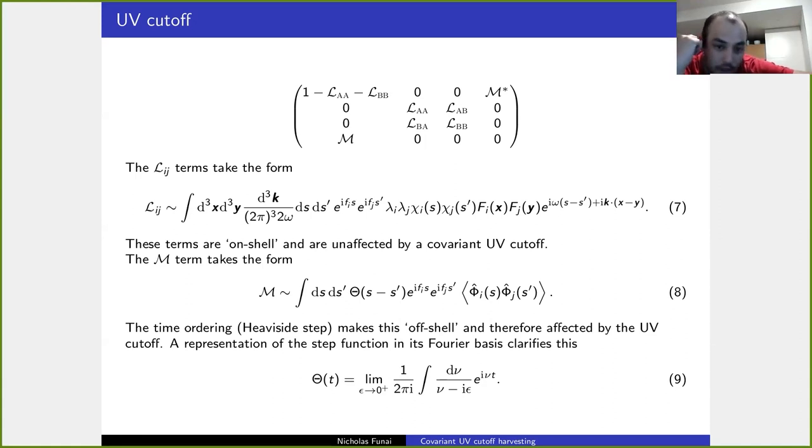When we apply our UV cutoff, those terms will vanish and M will be modified. The way to do this is we express the Heaviside step function in terms of its Fourier expansion, which is what we have in equation nine, which is basically an integral d nu divided by nu minus i epsilon e to i nu t. You can demonstrate that this expression is true just by using the residue theory from complex analysis. When we actually start introducing a UV cutoff, what that will mean is it will involve truncating the limits of the integral of d nu.